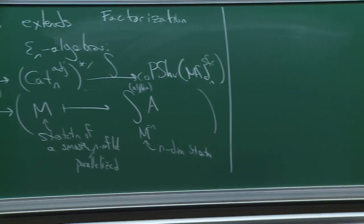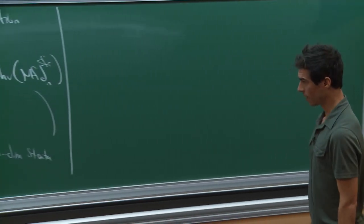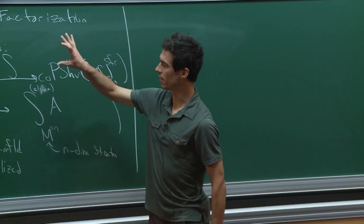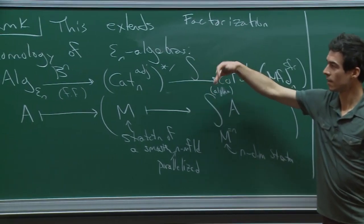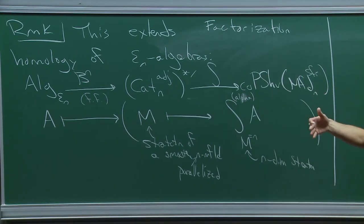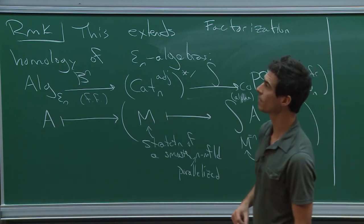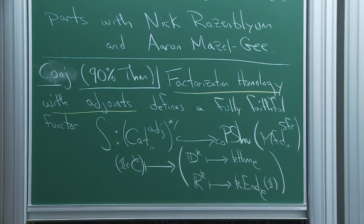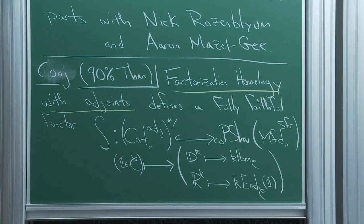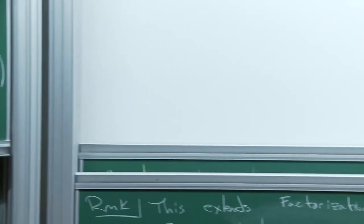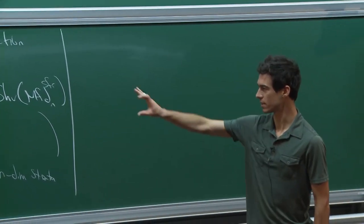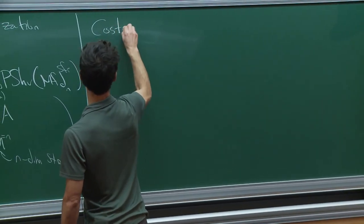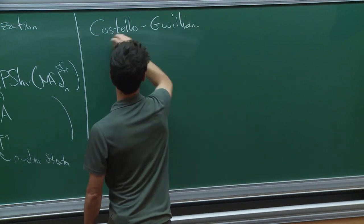This version of factorization homology for E_n algebras I think of as codifying the observables of a perturbative topological QFT. The intention behind this—really the k-linear version—abstracts the observables of a not necessarily perturbative TQFT.